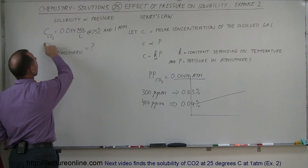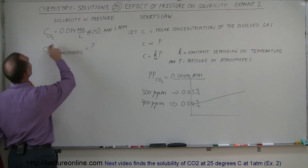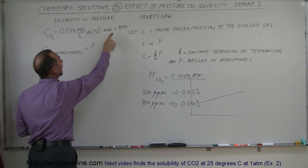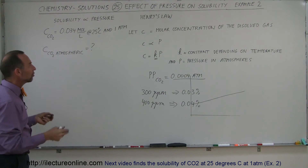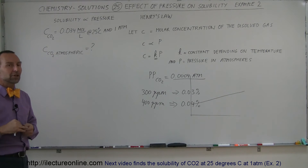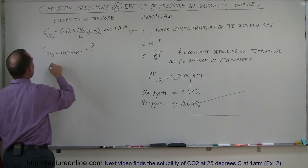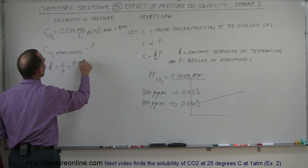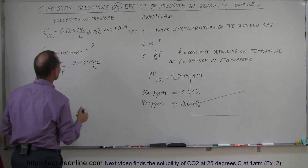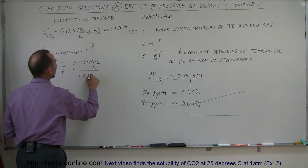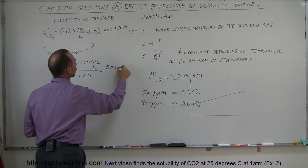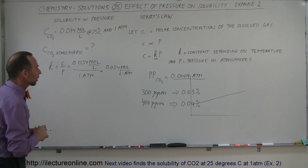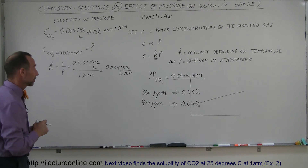My textbook gave me this information: the solubility of carbon dioxide is 0.034 moles per liter at 25 degrees centigrade and one atmosphere. So the question is, what is the solubility of carbon dioxide in current atmospheric conditions? The first thing we can do is find K. By definition, K equals solubility divided by pressure, which is 0.034 moles per liter divided by one atmosphere — making K equal to 0.034 moles per liter per atmosphere. That's the Henry's Law constant for carbon dioxide at 25°C.